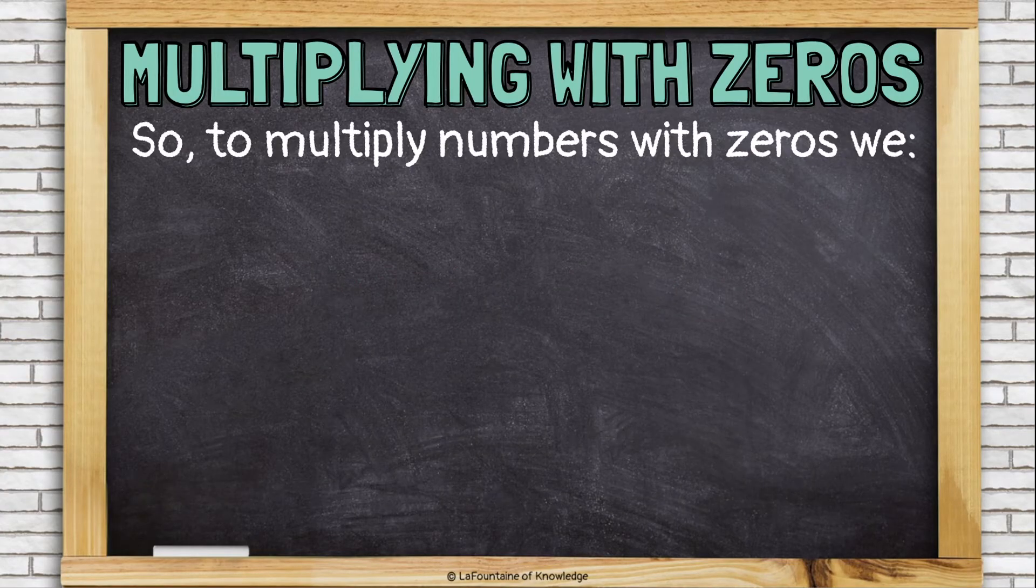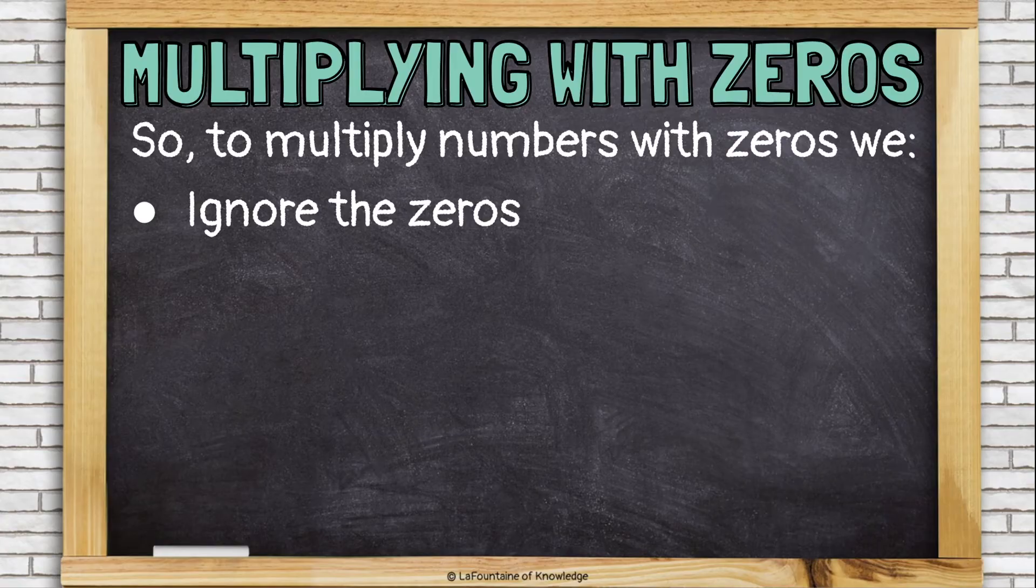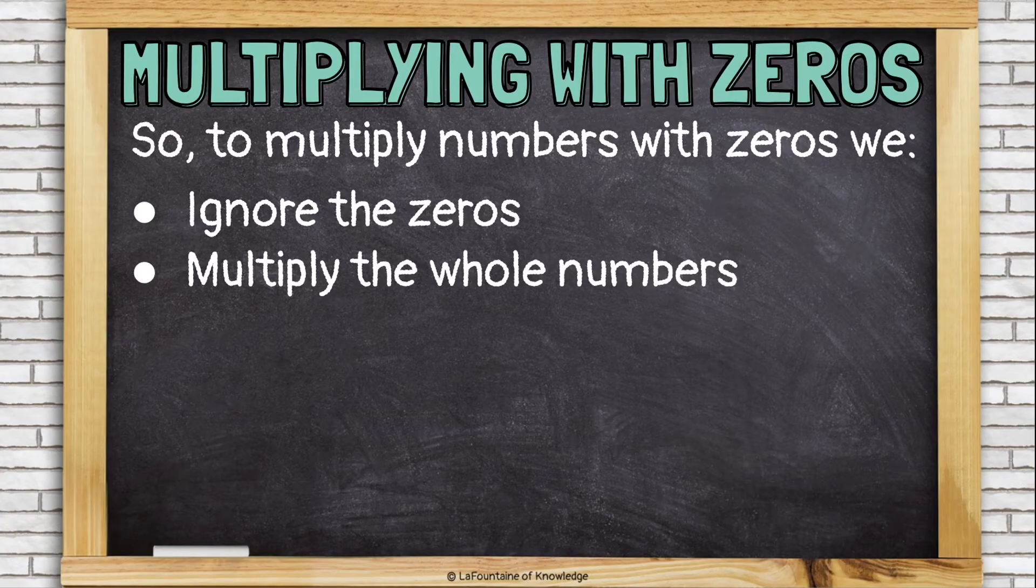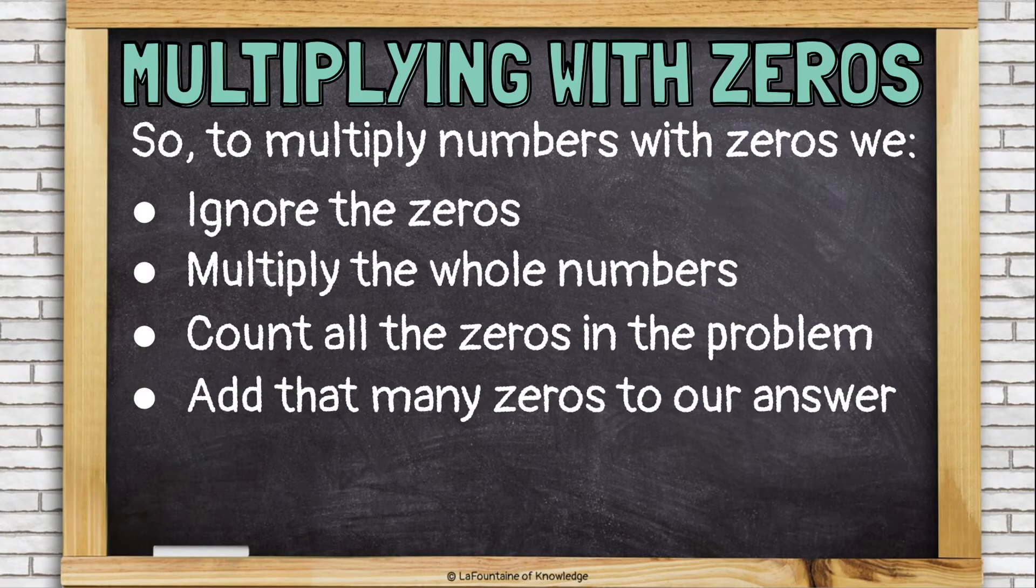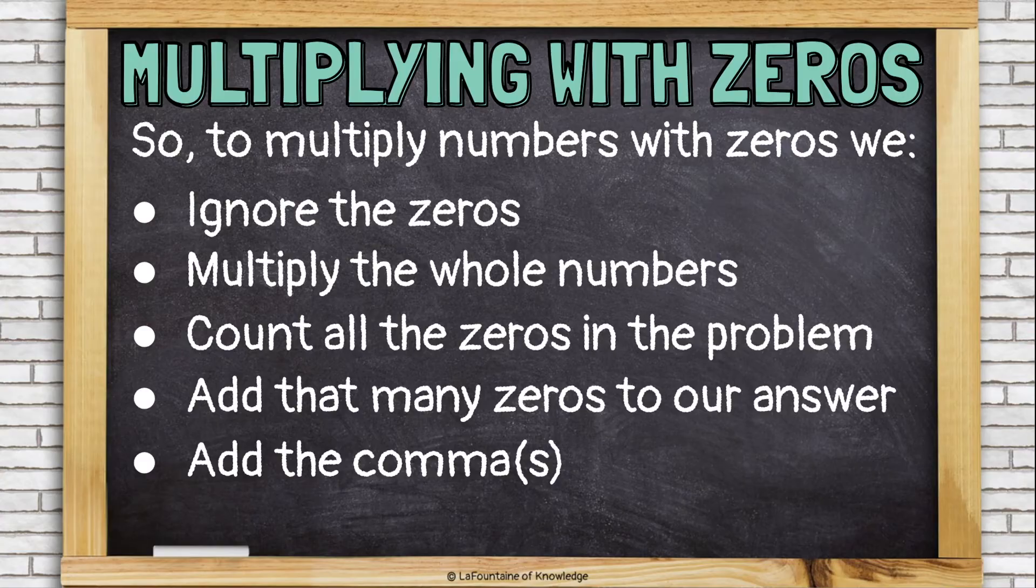So to multiply numbers with zeros, we ignore the zeros, multiply the whole numbers, count all the zeros in the problem, add that many zeros to our answer, and then add the comma, or it might even be more than one comma.